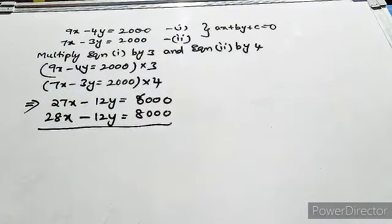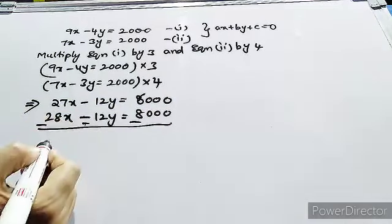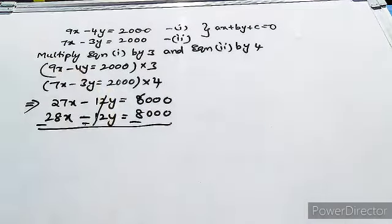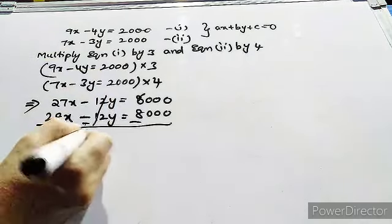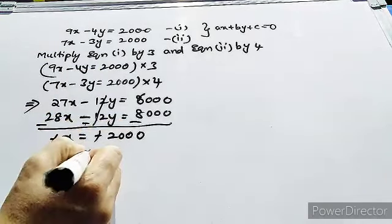So in our previous video we discussed if the equation has same sign you have to subtract. Minus into minus will become plus, plus 12y minus 12y is cancelled. 27x minus 28x is minus x equals minus 2000. x equals 2000.